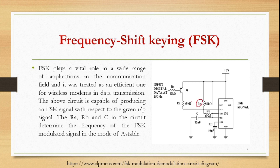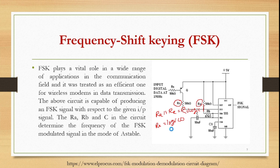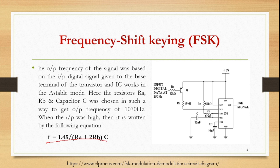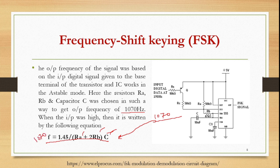RA and RC play an important role: when RA is in parallel with RC, it gives a new resistor value for logic 1, and RA alone is used for logic 0. The formula is f = 1.45 / ((RA + 2×RB) × C). To get a frequency of 1070 Hz, we choose RA, RB, and C accordingly. With RB and C fixed, we solve for RA, which comes out to approximately 50 kilo-ohms.